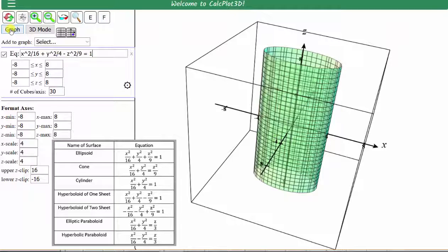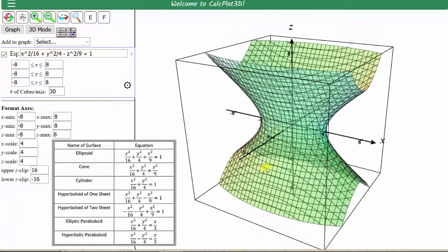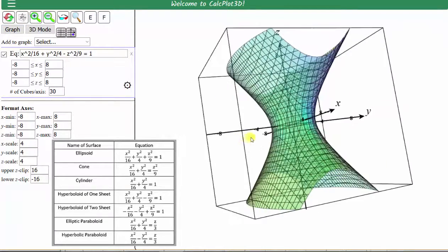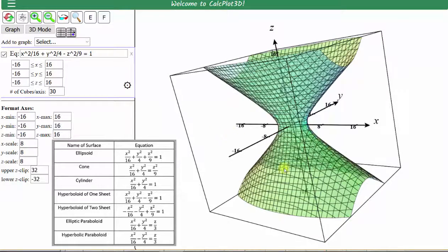And then we have minus z to the second or z squared divided by 9 equals 1. And click graph. And we have the hyperboloid of one sheet. Let's zoom out to get a slightly different view.